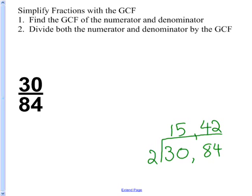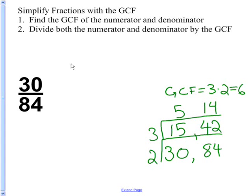I can use my divisibility rules and see that 3 will go into both 15 and 42. 3 goes into 15 5 times, 3 goes into 42 14 times. Since there's nothing that goes into both 5 and 14 except for 1, I found my GCF. My GCF is 3 times 2, which is 6. So the greatest common factor of 30 and 84 is 6.